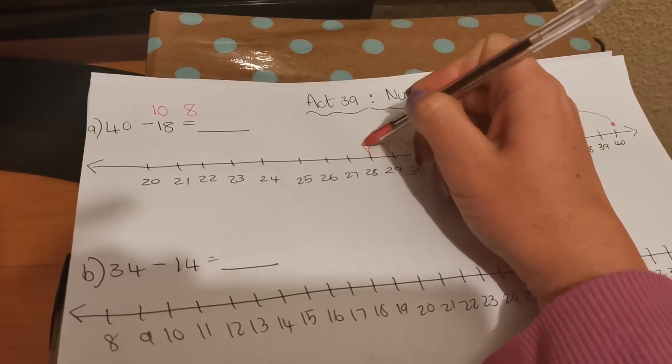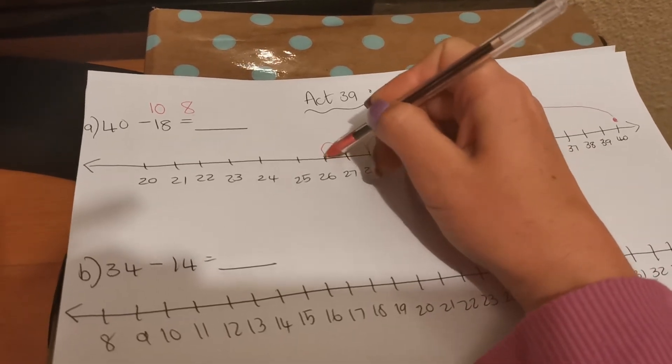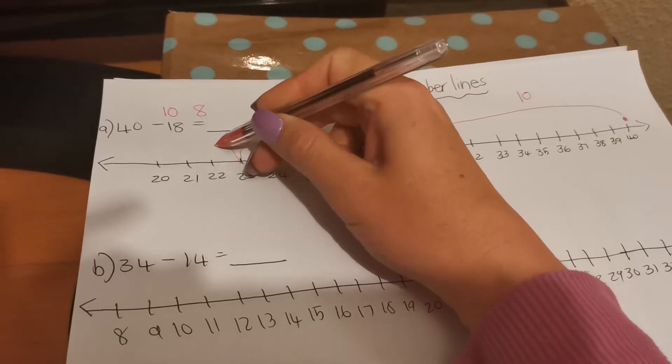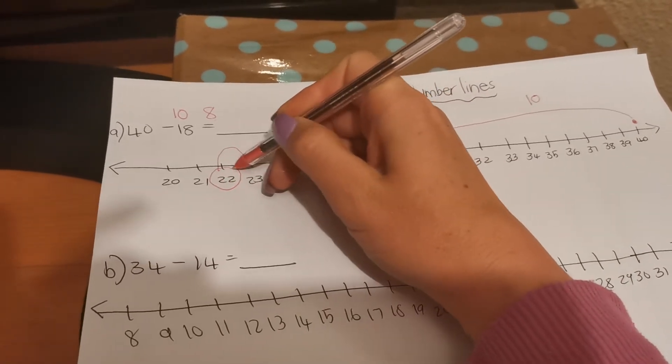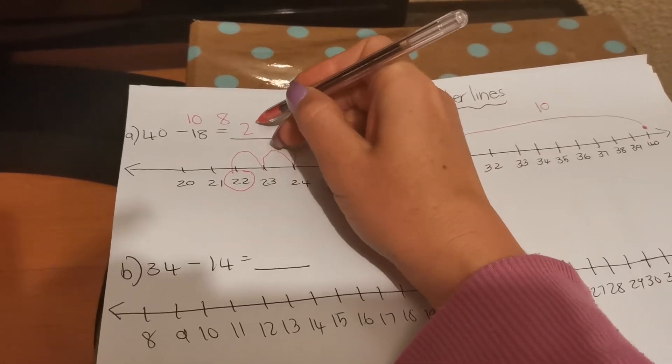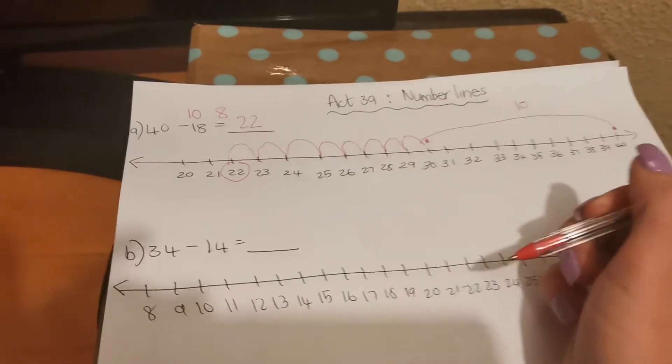1, 2, 3, 4, 5, 6, 7, 8. And you land on number 22. So 40 take away 18 is 22.